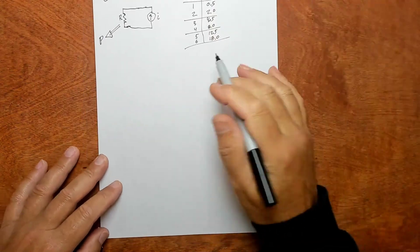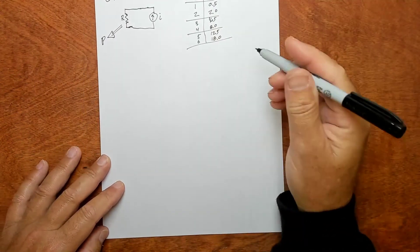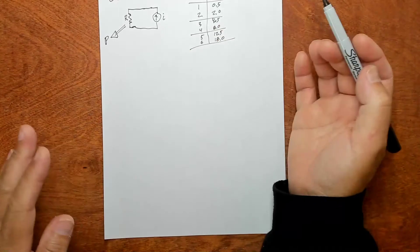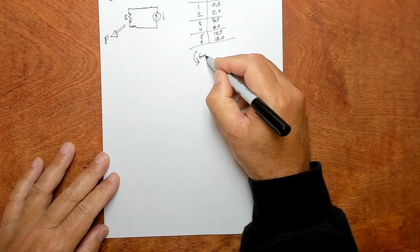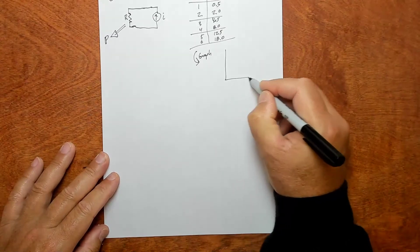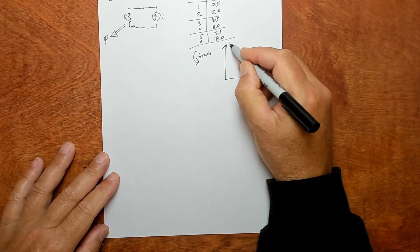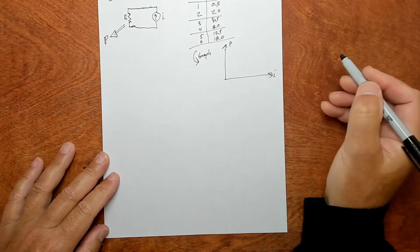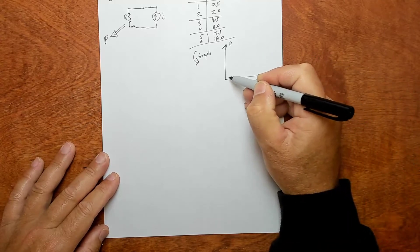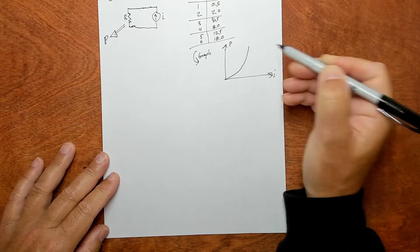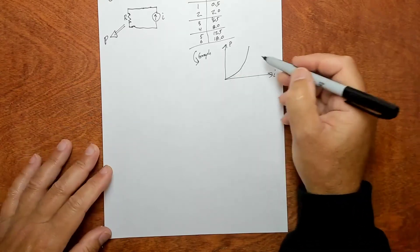Anyway, just thinking about the reality of the situation. So now what? Well, you might be tempted to graph this thing, and if you did you'd get something that looks like this: you'd get a power curve, power versus current.